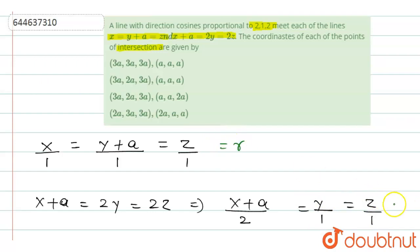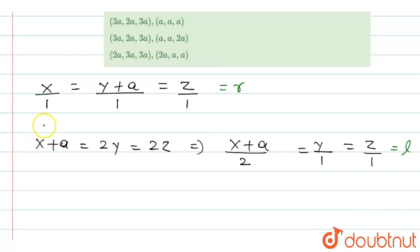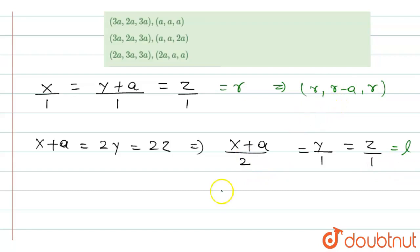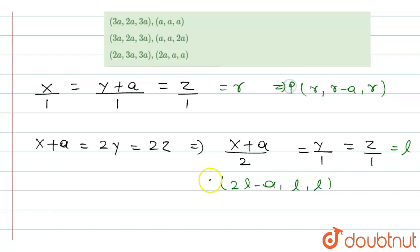From the first equation, the coordinates can be written as (x, y, z) = (r, r − a, r). From the second equation, the coordinates can be written as (2l − a, l, l). Let us call the first point P and the second point Q.